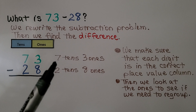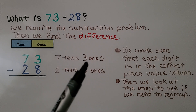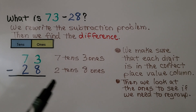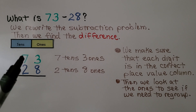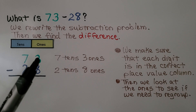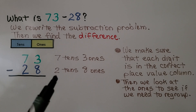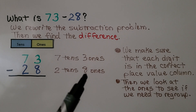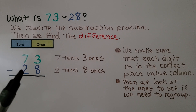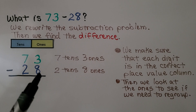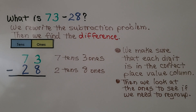What is 73 minus 28? 73 is seven tens and three ones. We put the seven in the tens place and the three in the ones place. 28 is two tens and eight ones. We put the two in the tens place and the eight in the ones place. We make sure that each digit is in the correct place value column.